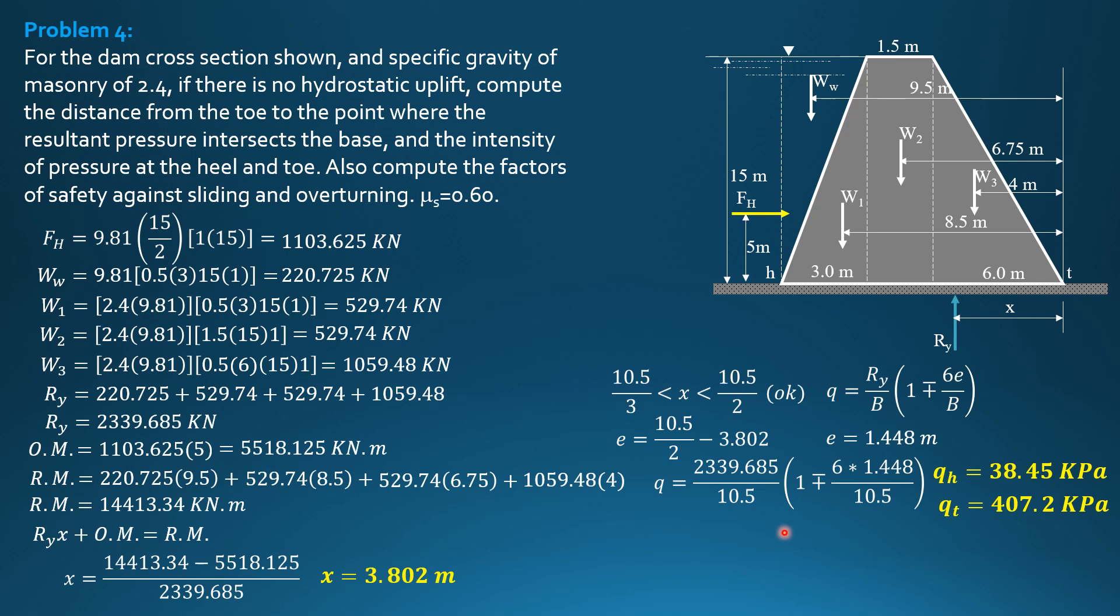Then the factor of safety against sliding and overturning. Against overturning first, righting moment 14413.34 over overturning moment 5518.125. So factor of safety against overturning is 2.612.